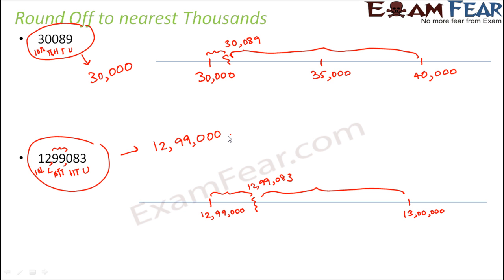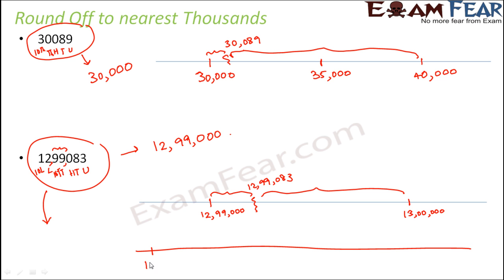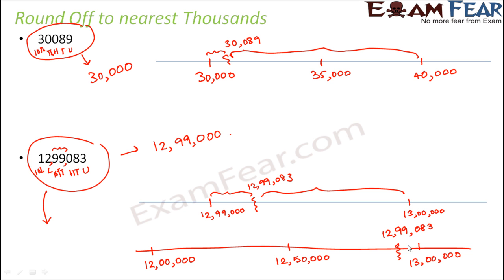If we want to round 12,99,083 to the nearest lakhs, in that case this number lies somewhere between 12 lakhs and 13 lakhs. The midpoint would be 12 lakh 50,000. Since this number is 12 lakh 99,083, it is very close to 13 lakhs, so we can round it off to 13 lakhs.